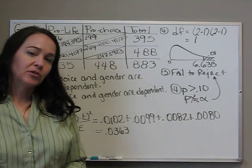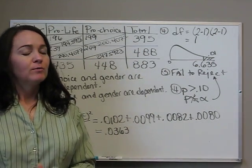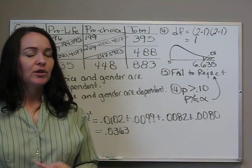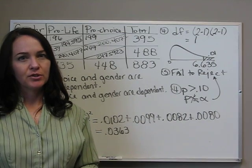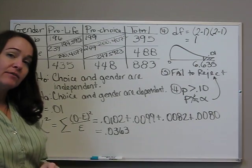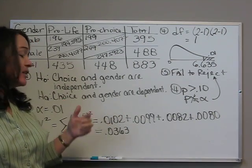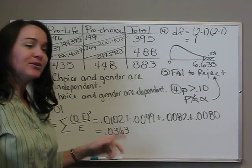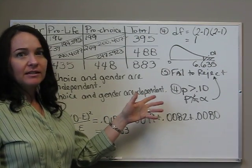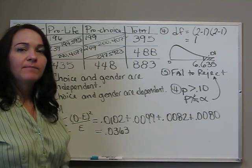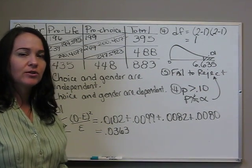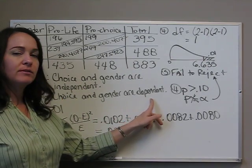Then we just have to go to our interpretation. Whether we have the p-value or the critical value approach, we only have one sentence if we fail to reject. That is, at the 1% significance level, the data do not provide sufficient evidence to conclude that choice and gender are independent. Or you could say, at the 1% significance level, the data do not provide sufficient evidence to conclude that choice and gender are dependent.